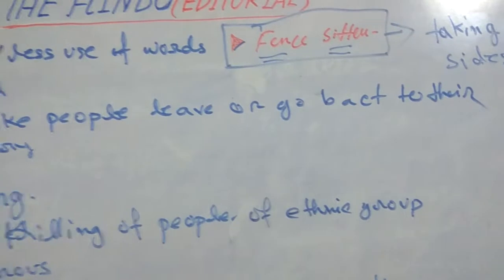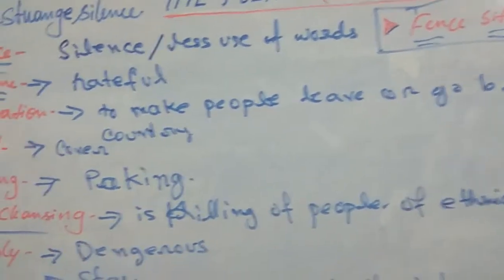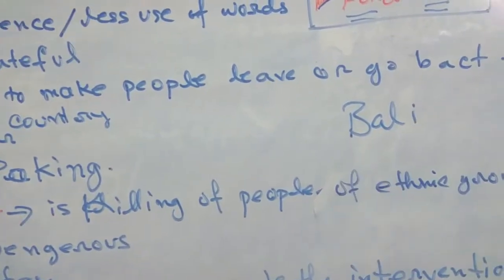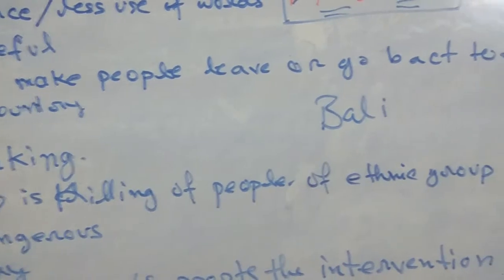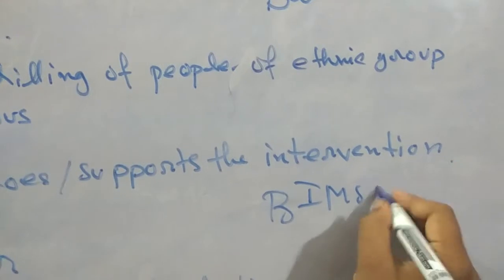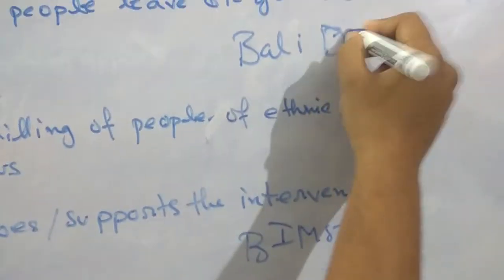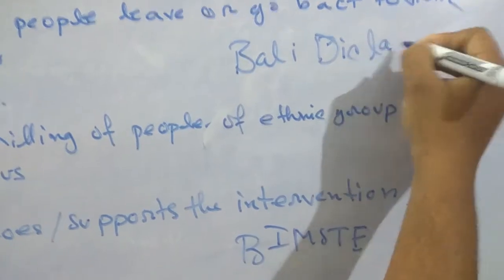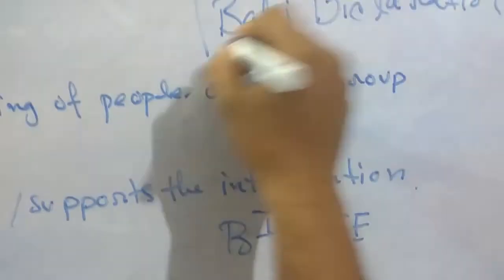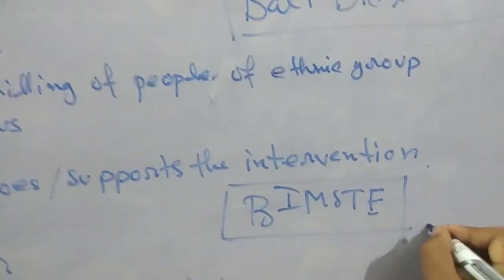There are two other references here: the Bali Declaration and the Bean Steak. We need to Google these — the Bali Declaration and Bean Steak. These are important for examinations; you should look into these facts on any website or Google.